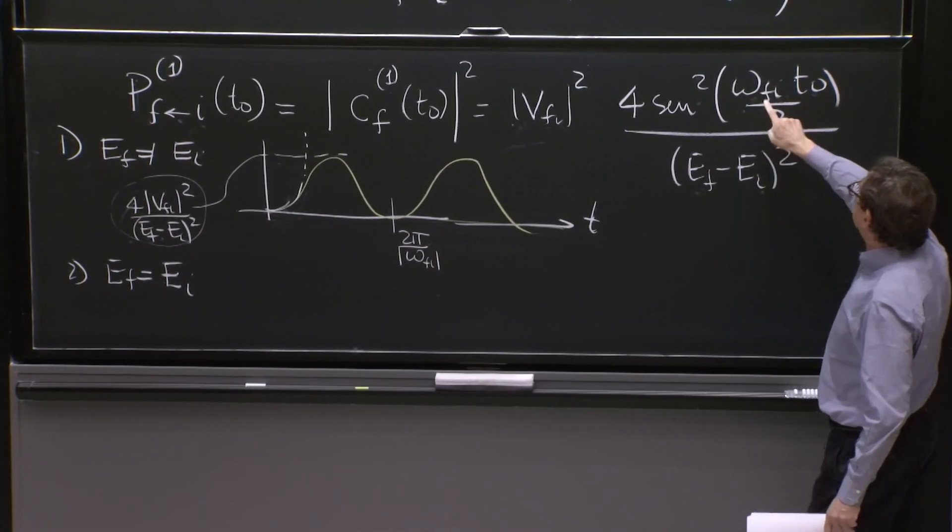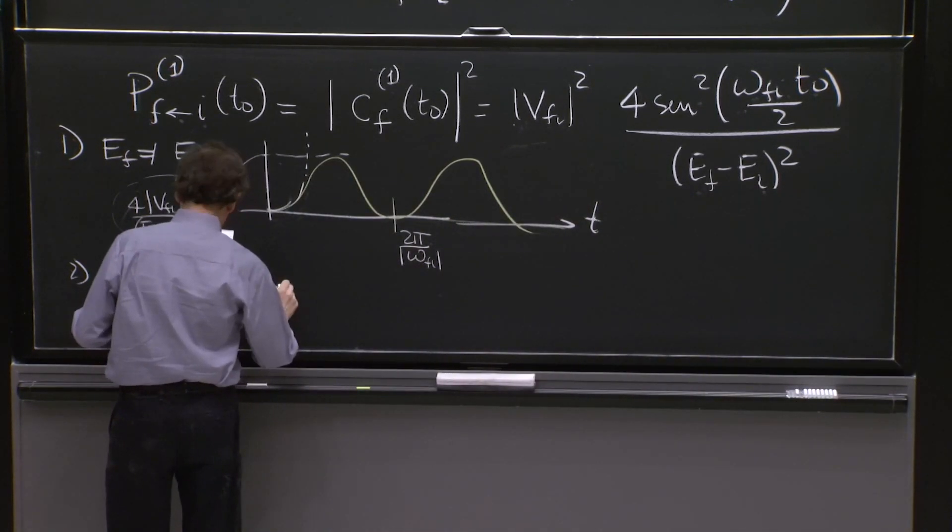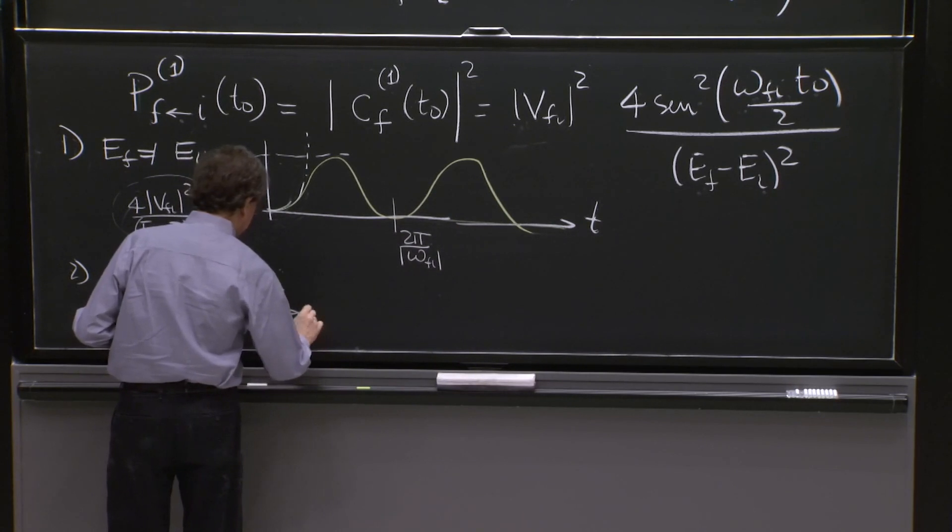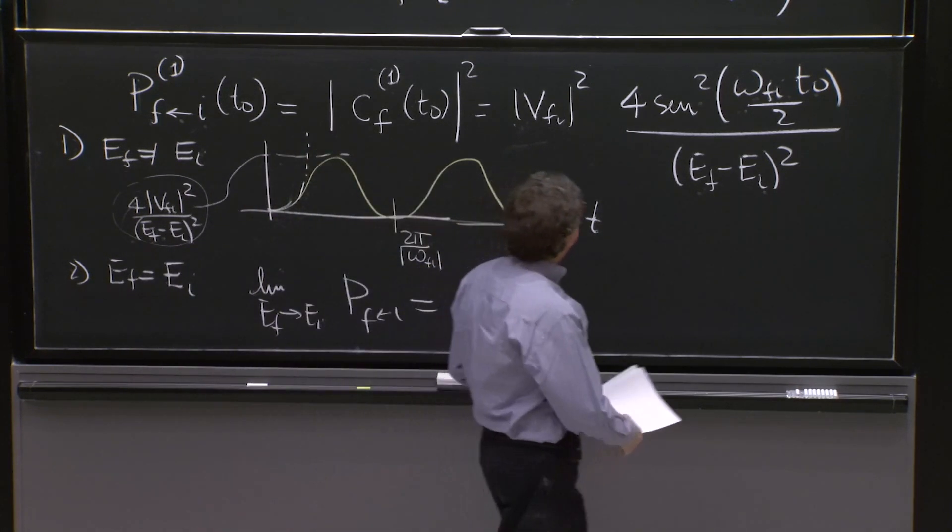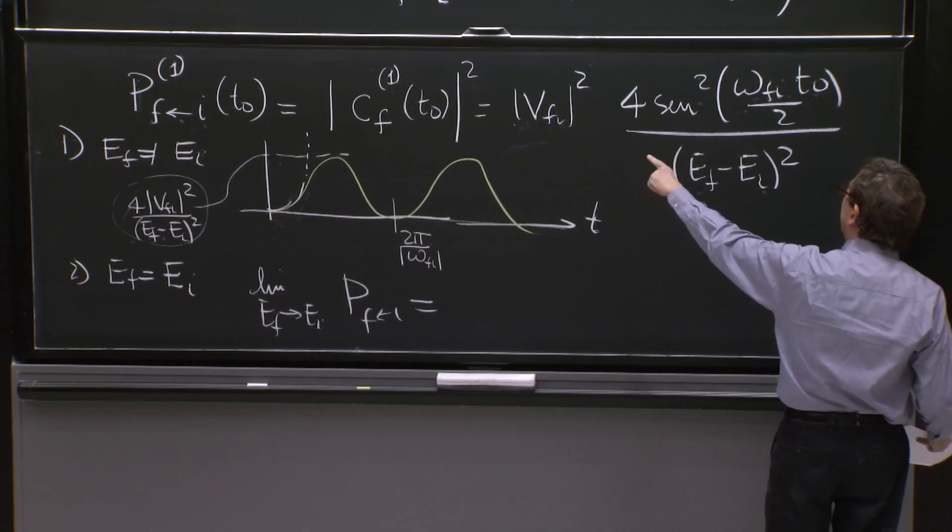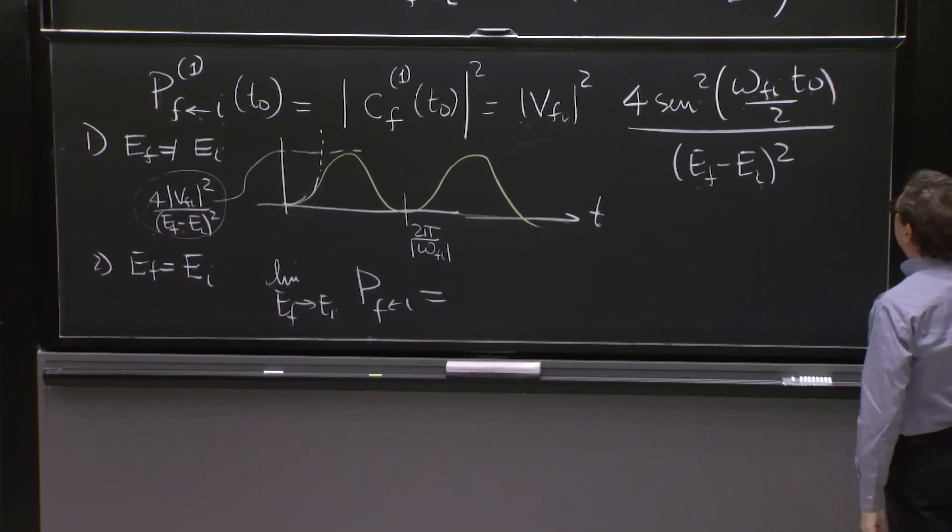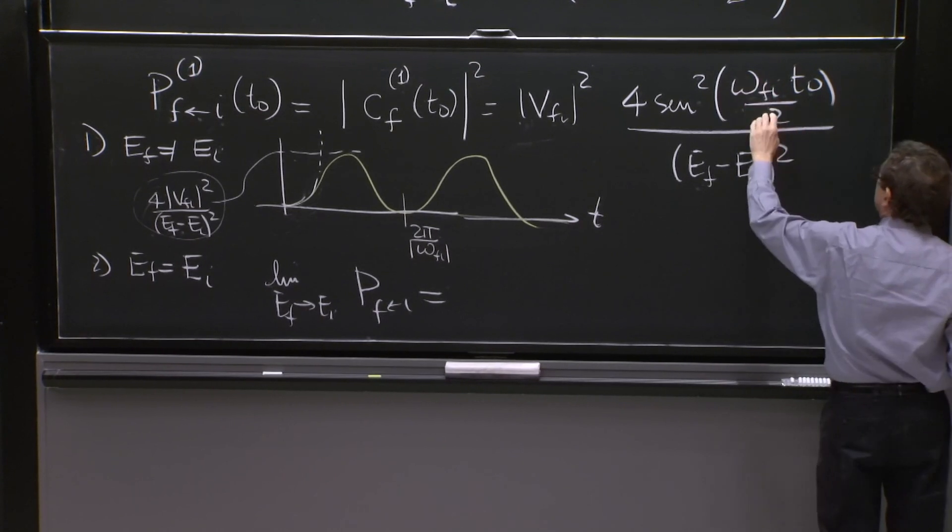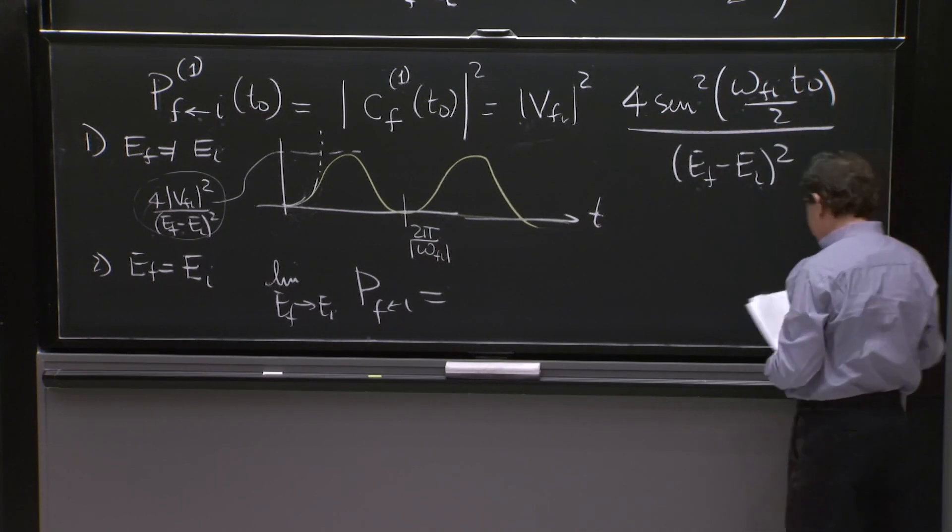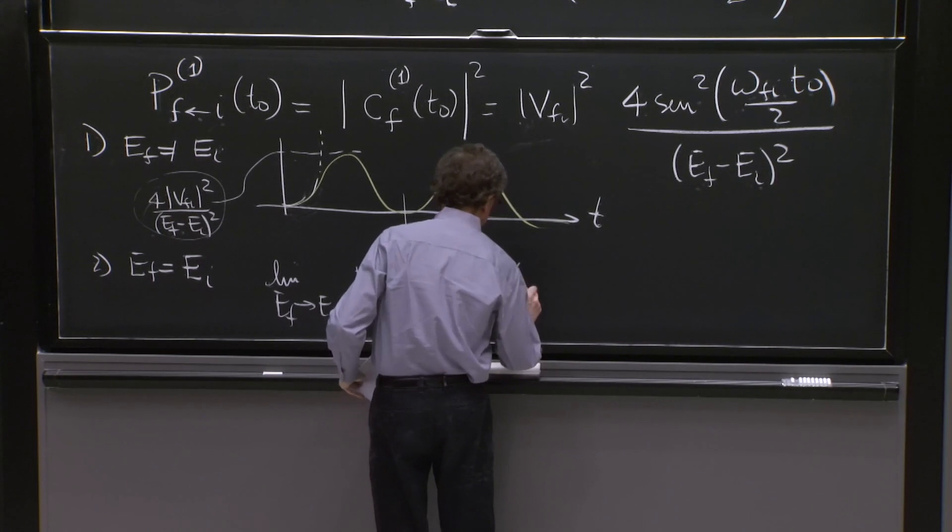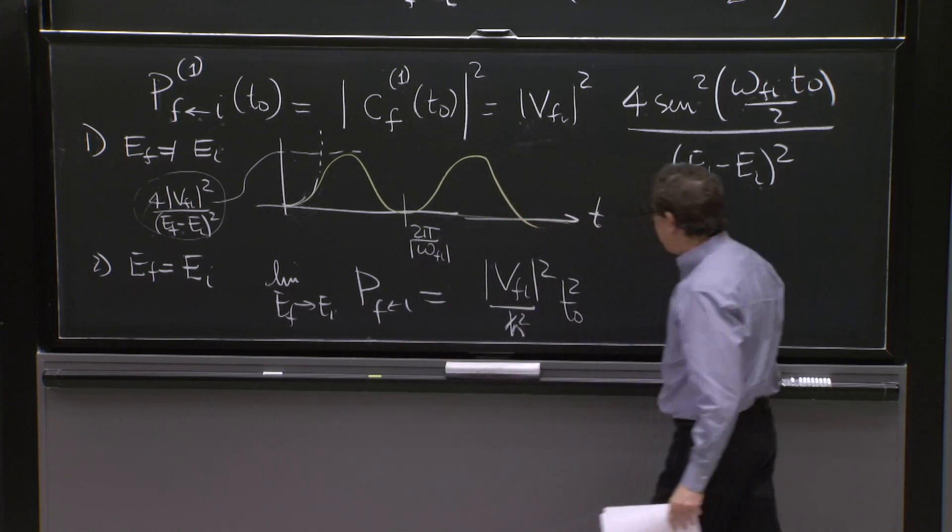Remember, omega Fi is EF minus EI over h bar. So the limit as EF goes to EI of this PIF is how much? I'll kind of do it in my head here. We have an h bar here that is going to be left over 1 over h bar, so h bar squared. This is going to cancel. The 4 is going to cancel with this. And we're going to get vFi squared over h squared t naught squared.